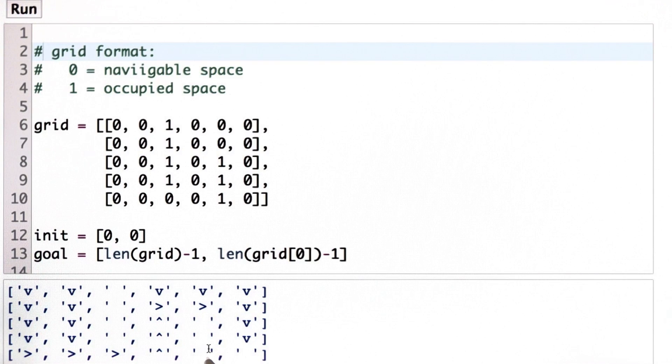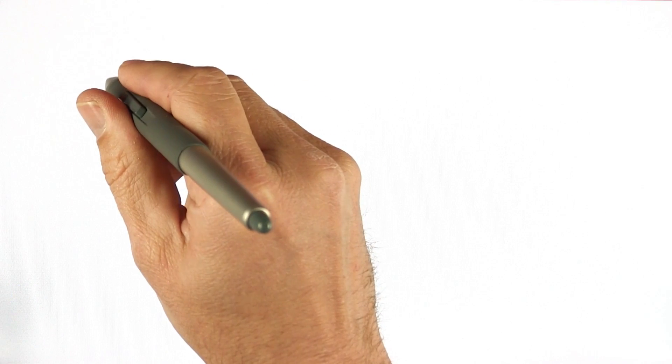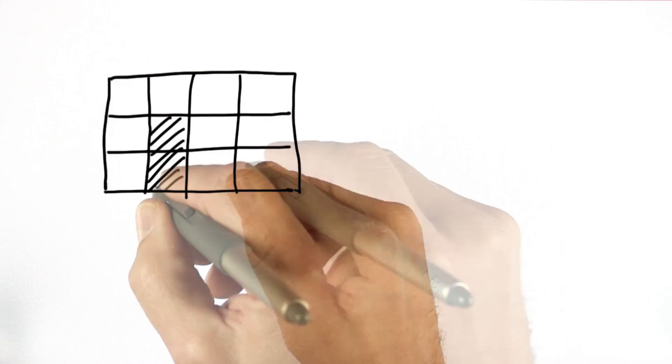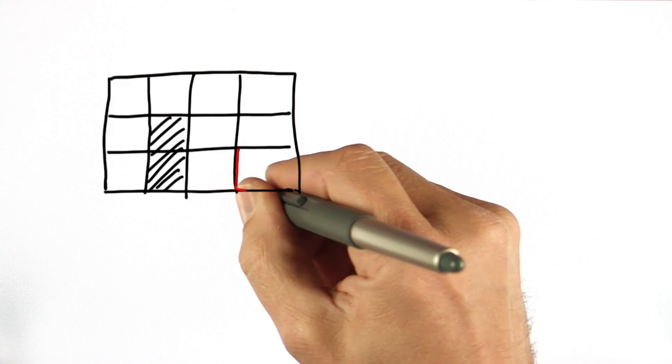How can we compute this efficiently? So let me make a simple example of a world like this with an obstacle over here. And say our goal state is the one in the corner over here.